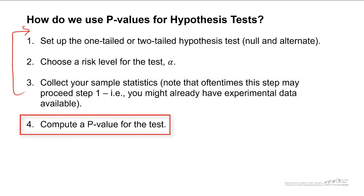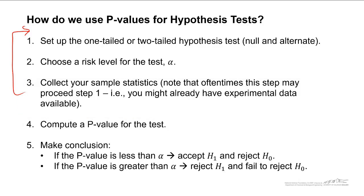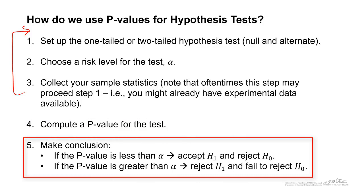You compute a p-value for the test, and that's what we've already done, and then you make your conclusion. If the p-value is less than your risk level of alpha, then you can accept the alternate hypothesis and reject the null. If the p-value is greater than alpha, you reject the alternate and fail to reject the null. There's no evidence that supports the alternate hypothesis.